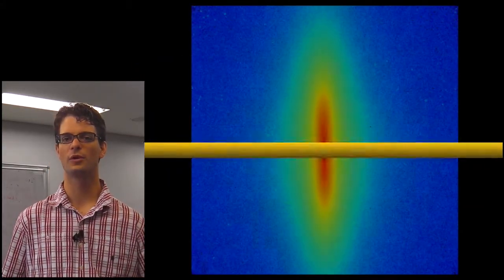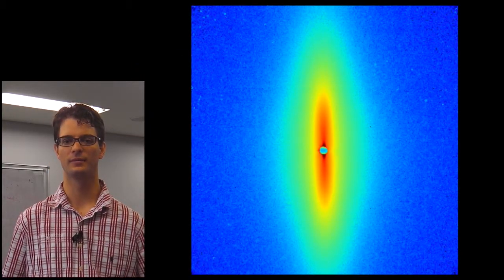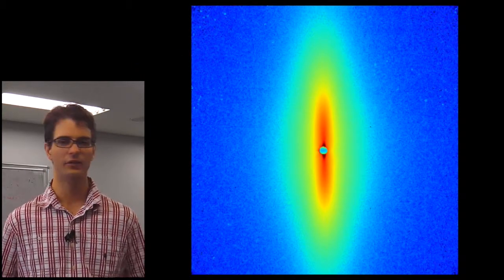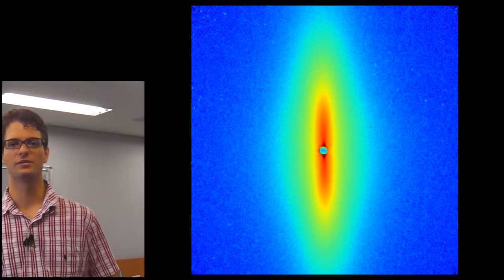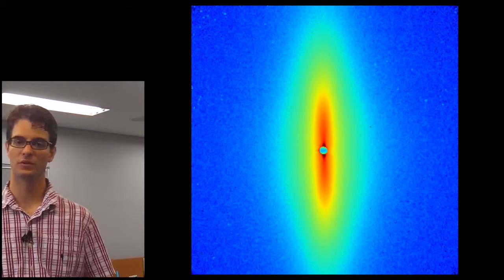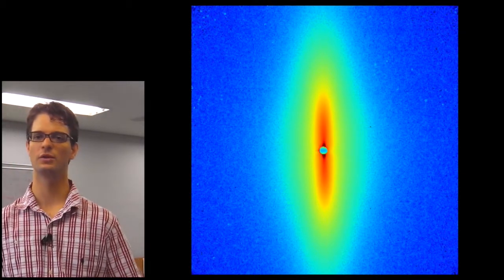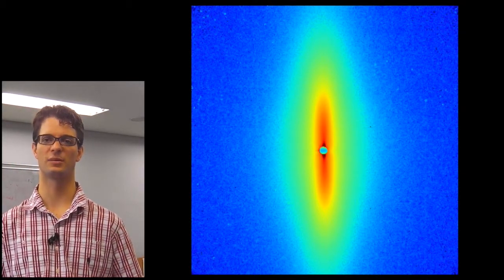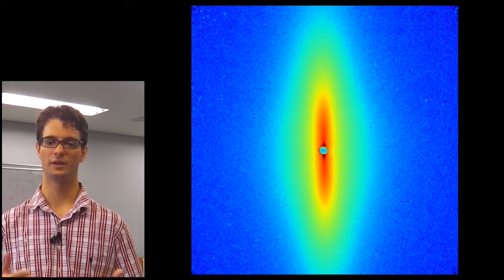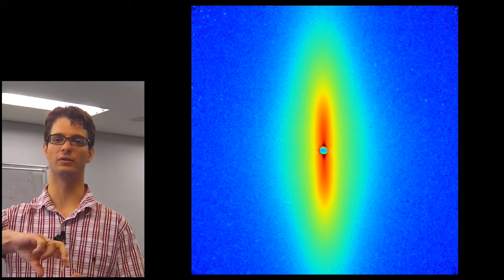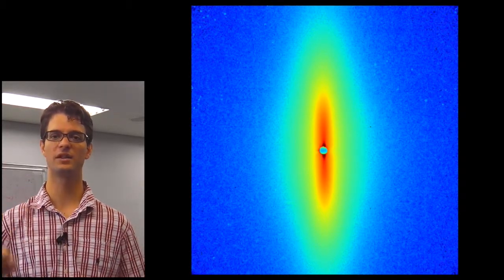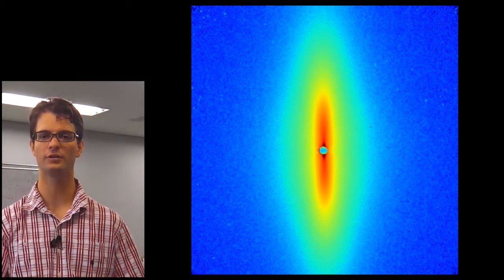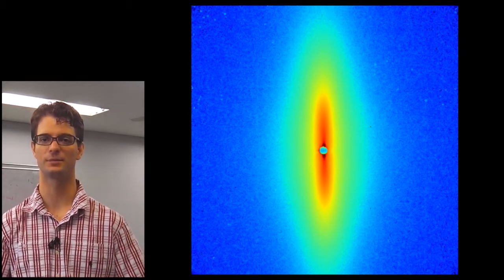So what can we do with small angle scattering? If we measure one of these fibers in a small angle scattering instrument, we get a very anisotropic scattering pattern. As you can see, we have a big scattering feature perpendicular to the fiber axis.